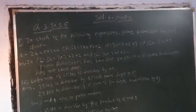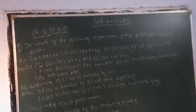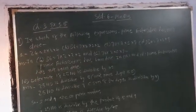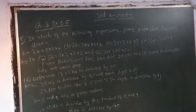In which of the following expressions, prime factorization has been done? A. 24 equal to 2 multiply 3, multiply 4. B. 56 equal to 7, multiply 2, multiply 2, multiply 2.